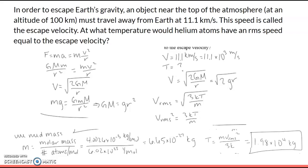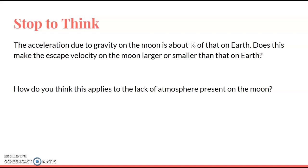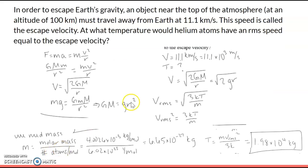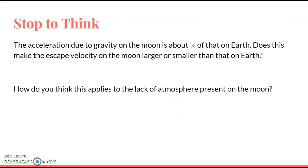So the question is, the acceleration due to gravity on the moon is one-sixth that of Earth. Is this going to affect the escape velocity? Hopefully you're thinking, well yeah, of course. Just on the previous slide we did the quick derivation that the escape velocity is the square root of 2gr. If the value of our gravitational acceleration becomes one-sixth, then our escape velocity is going to decrease as well—it's going to decrease by the square root of six.